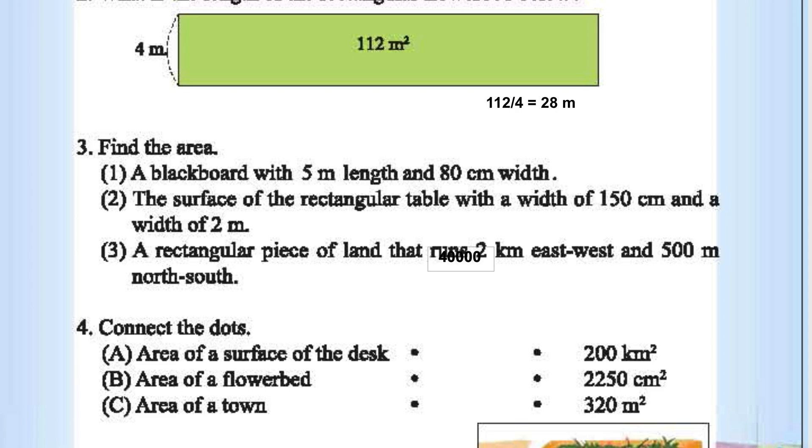Or 40,000 square centimeters. The surface of the rectangular table, width 150 cm and height of 2 meter. Again, convert both into meters. 2 into 1.5, 3 square meters or 3 times 10 to the power of 4 square centimeters.